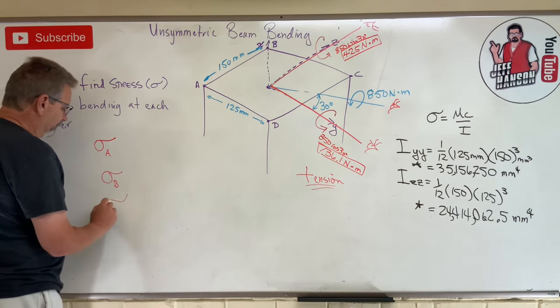Point D: bending towards me, point D is on the compression side — so that's negative: −(736.1 × 1000 × 75) / 35,156,250. For the Z-bending, D is also on the compression side — so it's also negative: −(425 × 1000 × 62.5) / 24,414,062.5. So the pattern is: Y-bending went negative, positive, positive, negative; Z-bending went positive, positive, negative, negative.